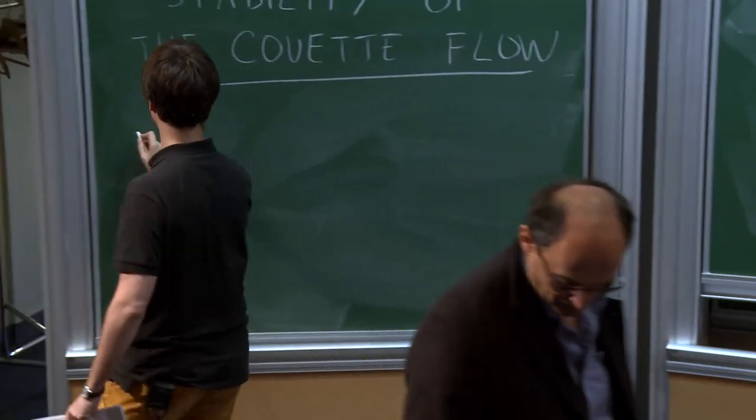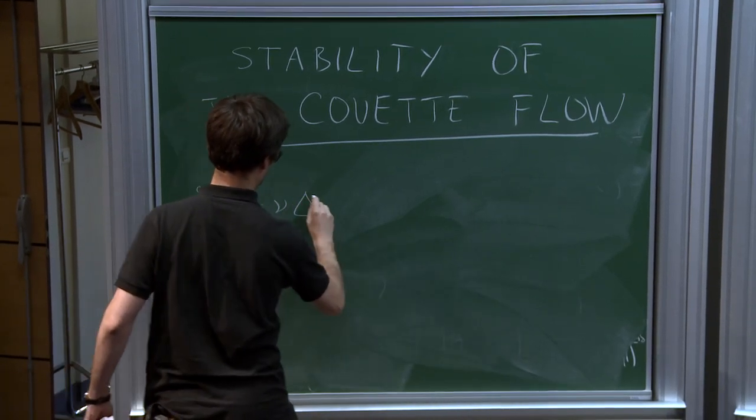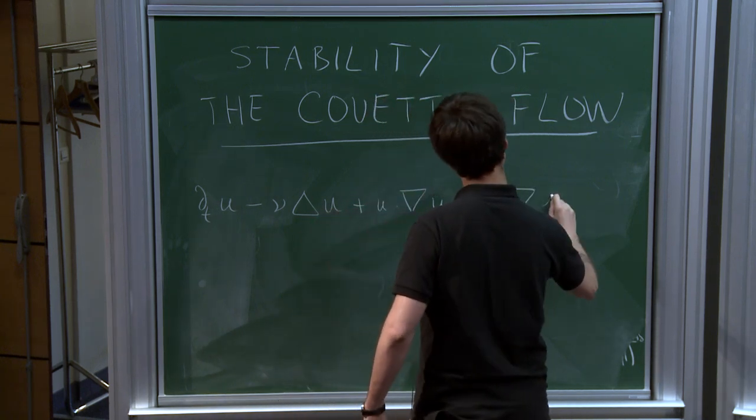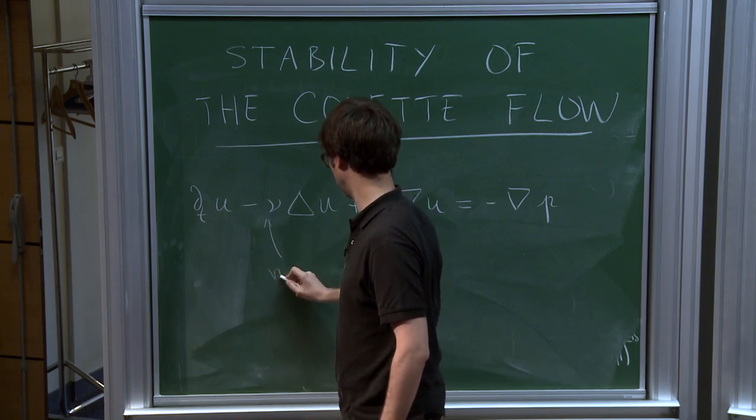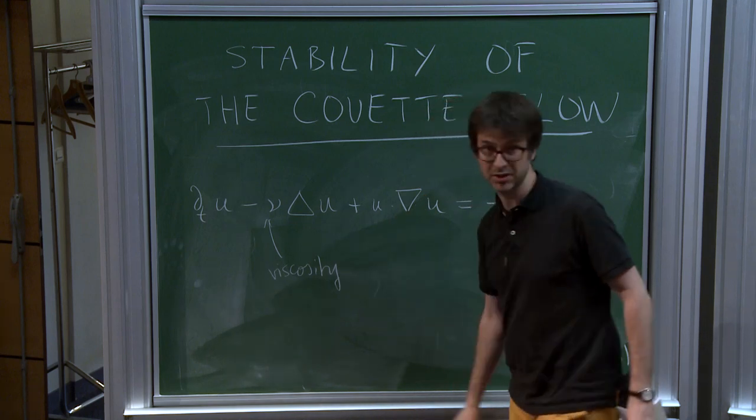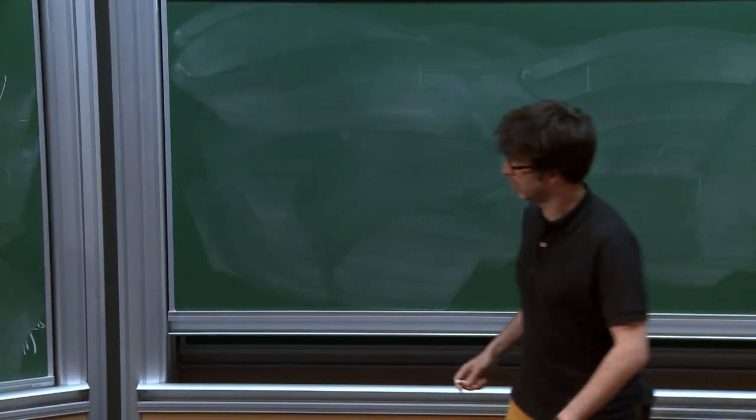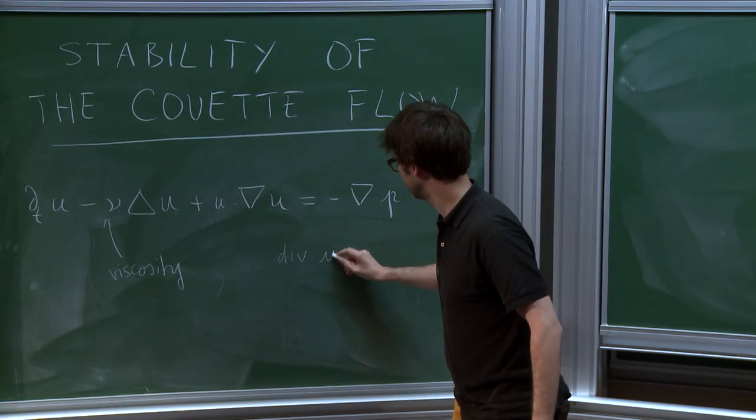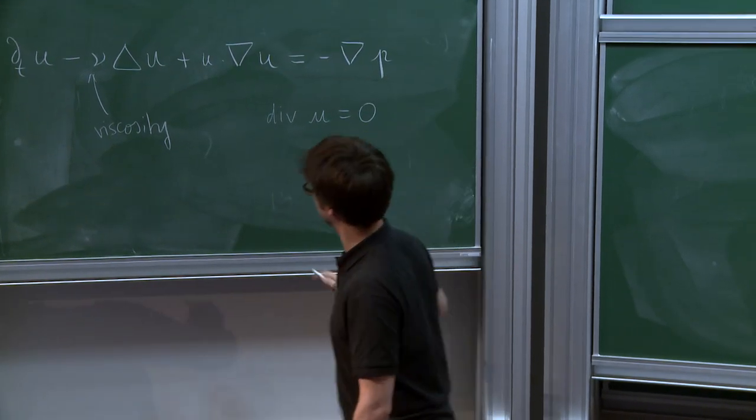So the equation is as follows, where nu is a positive coefficient which is called the viscosity and if nu equals zero, the equation is called Euler equation. And there is a divergence free condition, the divergence of U is zero.